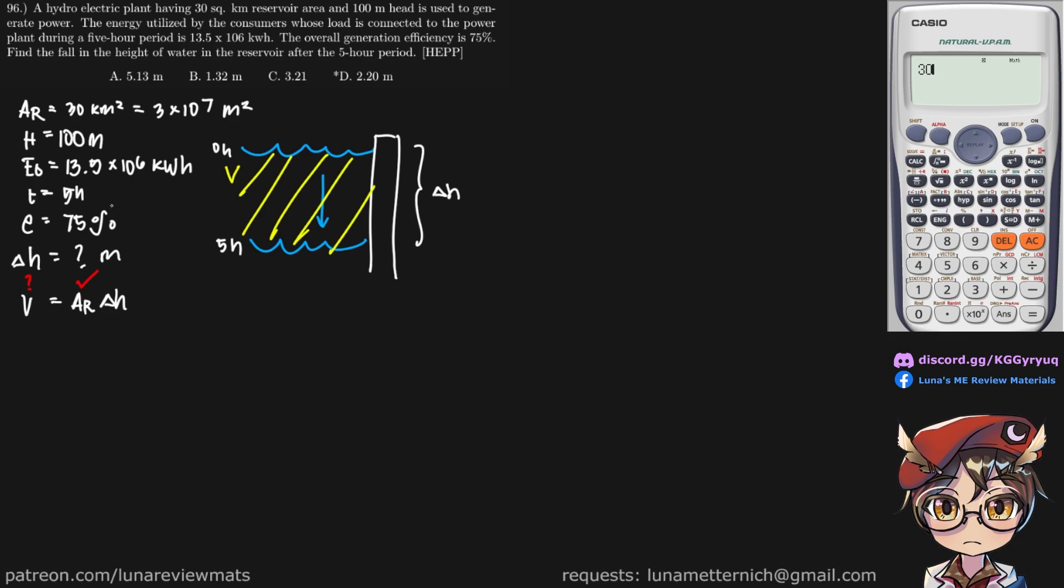So what comes to mind when we are trying to look for volume is Q. That's the volumetric flow rate. And that is present in the water power equation, which is gamma times Q times our head.